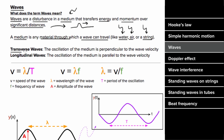For transverse waves, the disturbance of the medium is perpendicular to the wave velocity — the direction in which the disturbance travels. The oscillation of the medium refers to the direction in which the particles of the medium actually move. For a wave on a string, the particles move up and down, but the disturbance travels to the right, so this is a transverse wave.